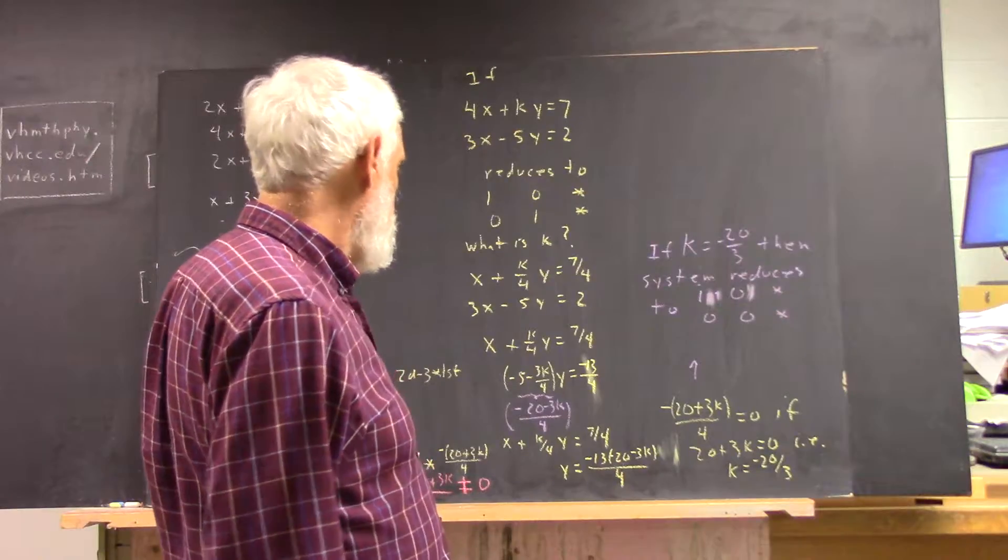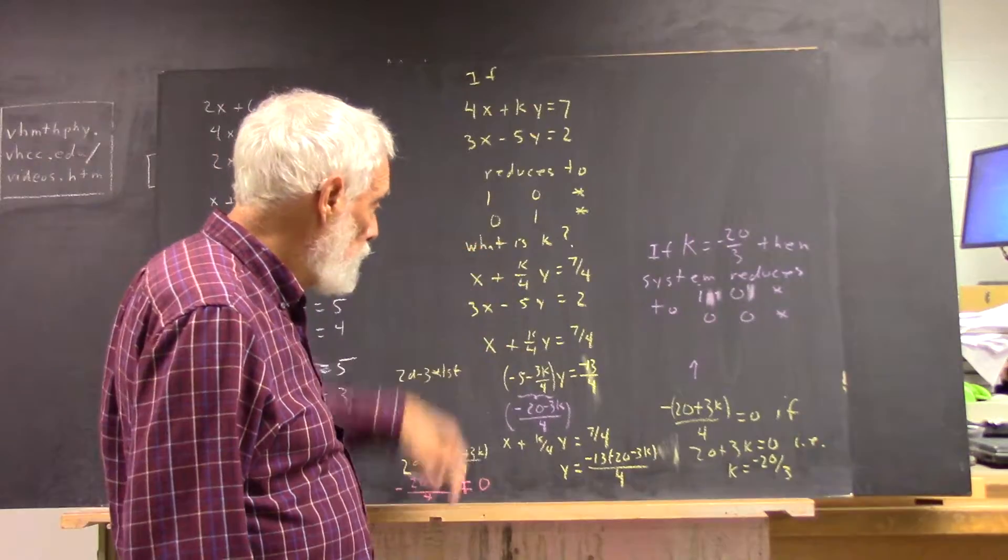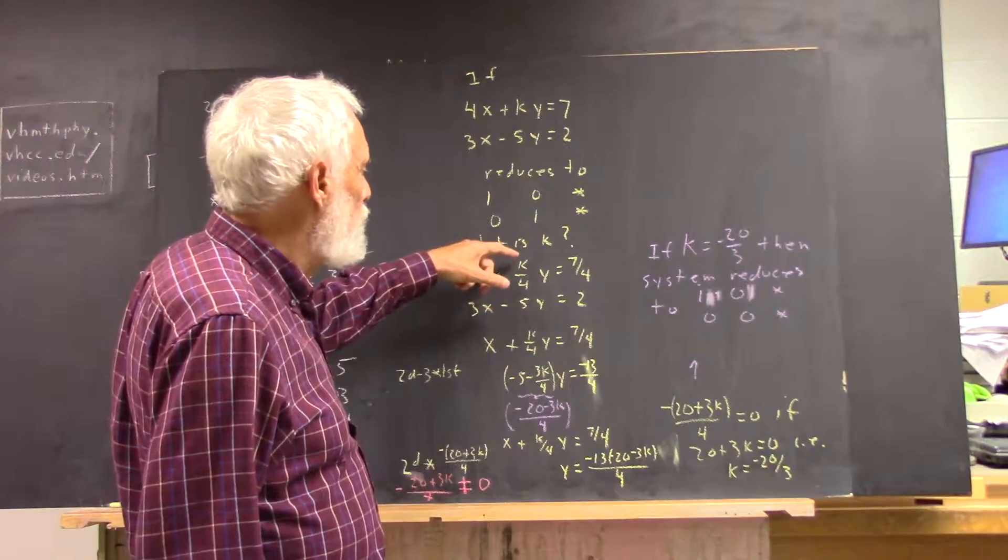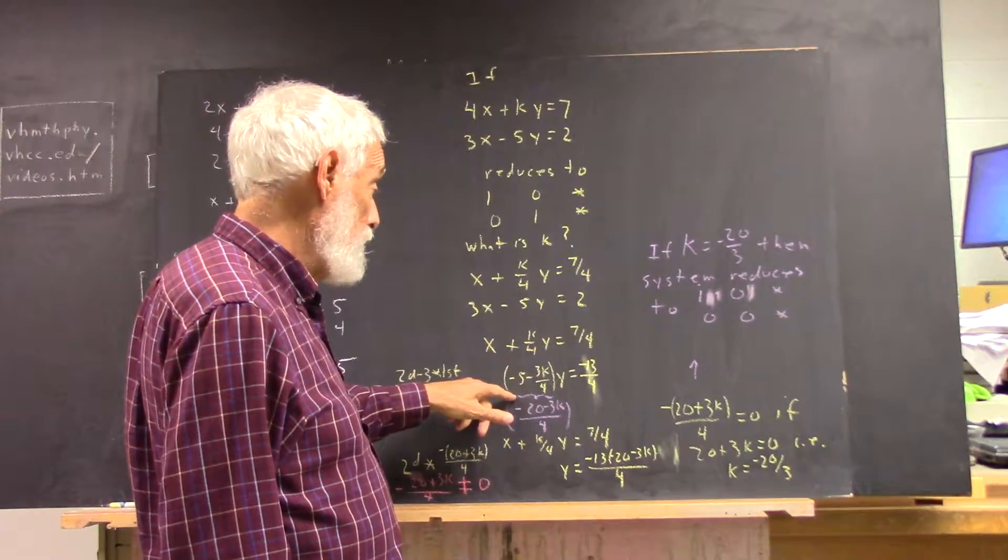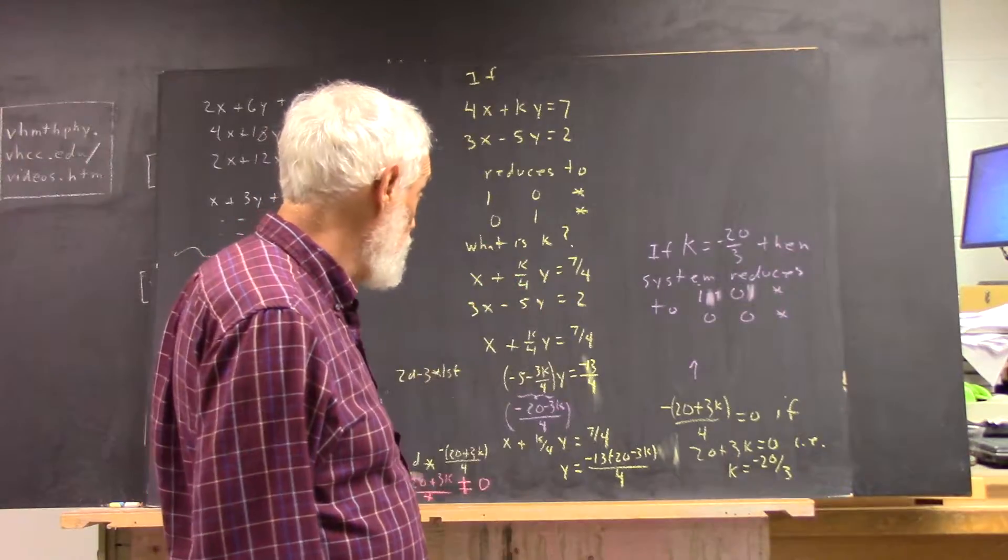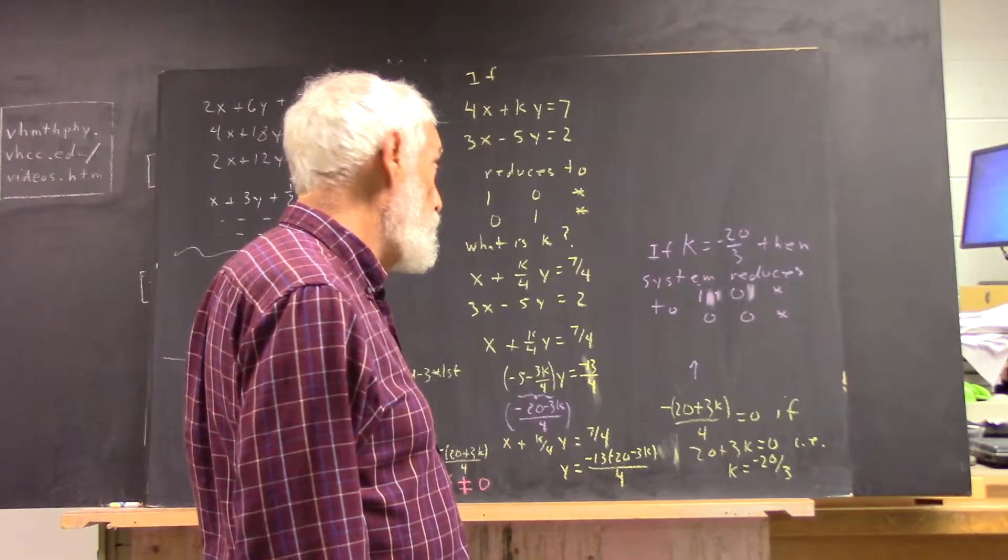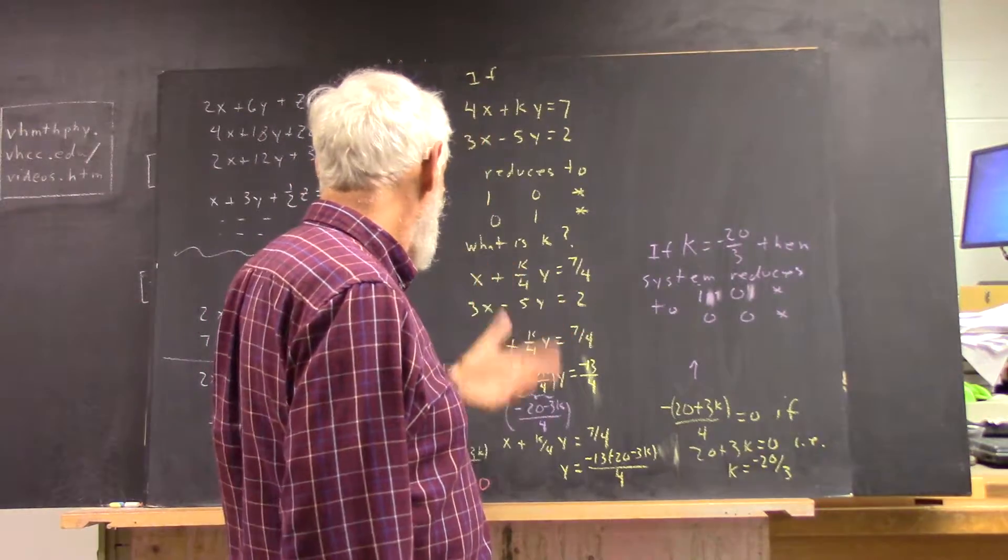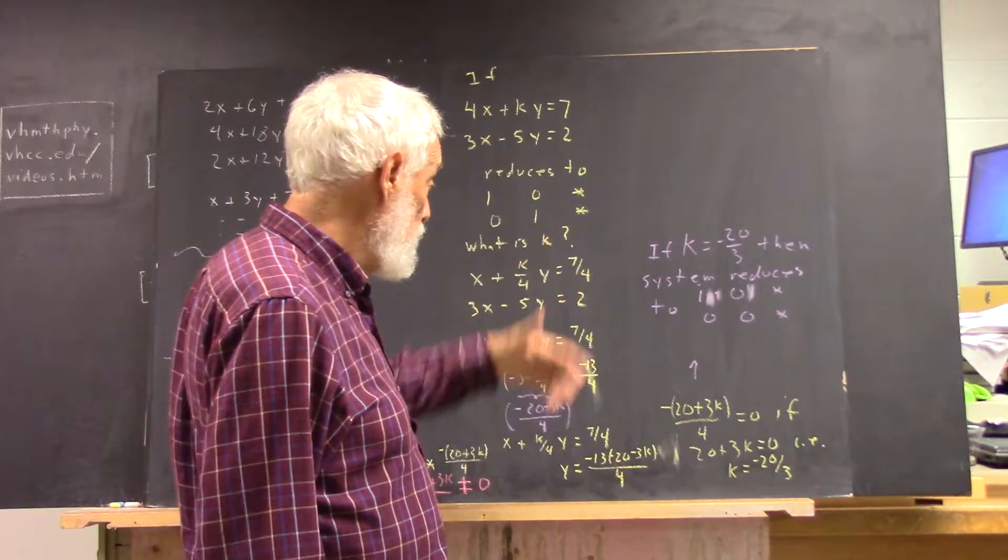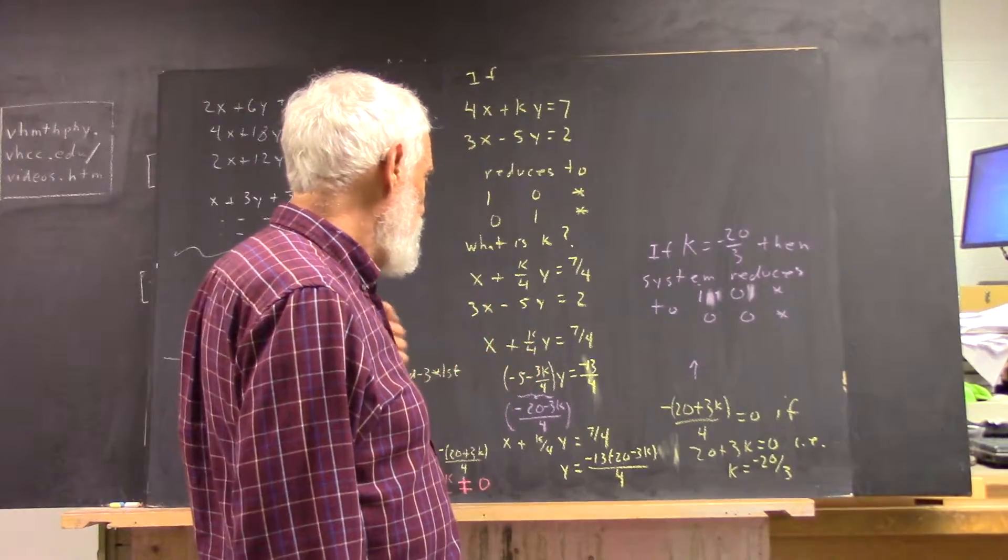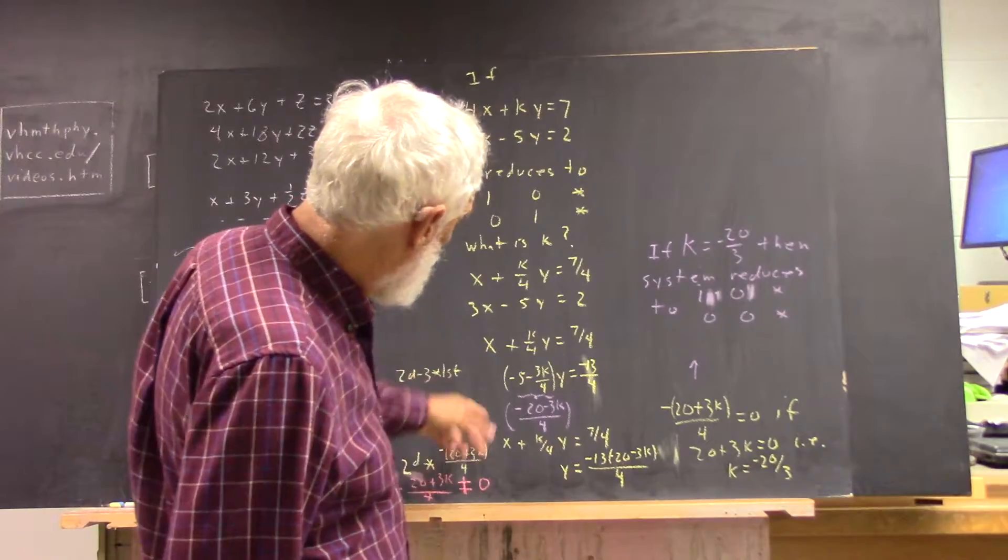Okay. And just a quick explanation. Negative 3 times K over 4 is negative 3K over 4. Adding that, so we have negative 3K over 4 times Y. Adding it to negative 5Y gives us negative 5 minus 3K over 4 times Y. Very simple. And then negative 3 times 7 fourths is 21 fourths—that ended up being negative 21 fourths. 2 is 8 fourths, 21 and 8. Negative 21 and 8 is negative 13, so we have negative 13 fourths. Assuming I've done that correctly. Check my arithmetic.